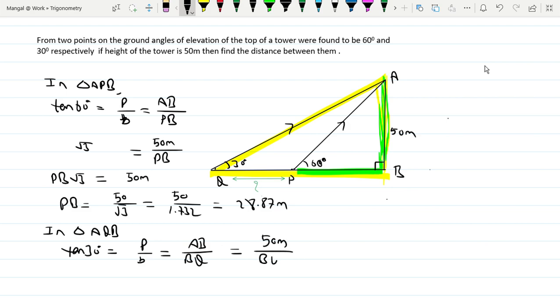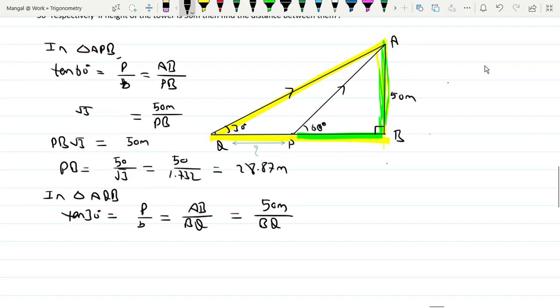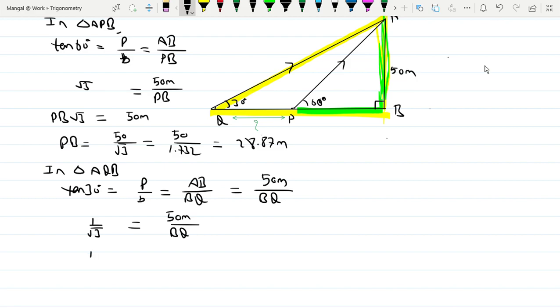So AB, which is 50 meters, over BQ. Tan 30 degrees value is 1 by root 3. So 1 by root 3 equals 50 meters divided by BQ. Cross multiplying, BQ equals 50 times 1.732. Using the calculator, BQ equals 86.6 meters.